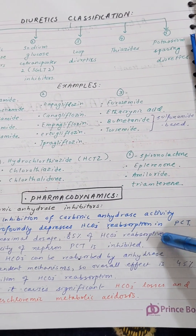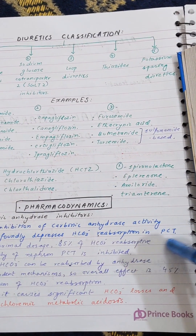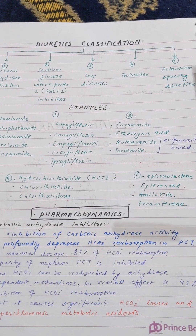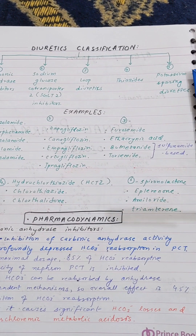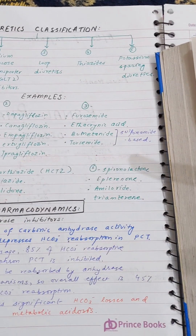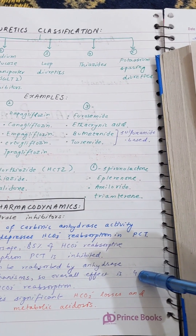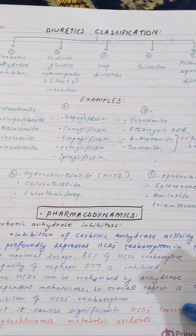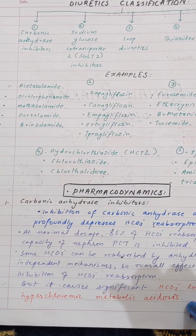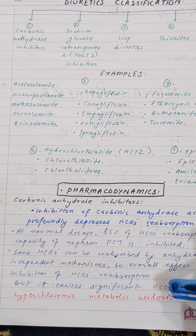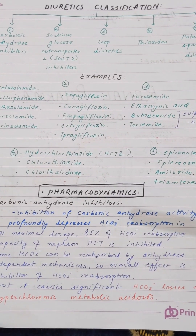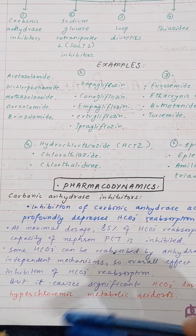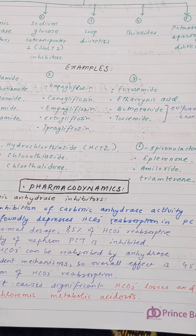Inhibition of carbonic anhydrase depresses the reabsorption of bicarbonate ions from the PCT. While other mechanisms can still reabsorb some bicarbonate, the loss is significant enough to cause hyperchloremic metabolic acidosis. When bicarbonate concentrations fall due to carbonic anhydrase inhibition, hyperchloremic metabolic acidosis results, as bicarbonate ions are lost in the urine.